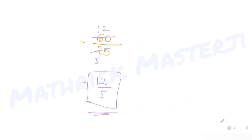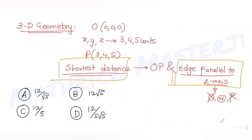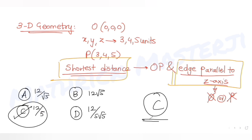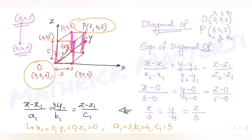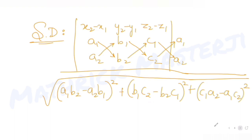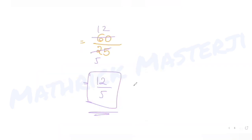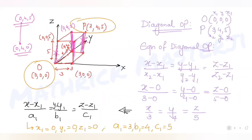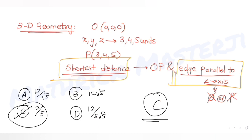So we get the answer 12 over 5, which matches with option C. So C is the correct answer for the question. To summarize: we found the equation of diagonal OP through origin and (3,4,5), extracted the parameters, then found the equation of the edge parallel to the z-axis, and applied the shortest distance formula to get 12/5.